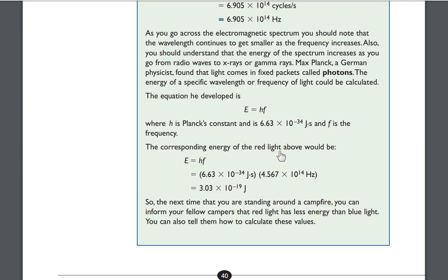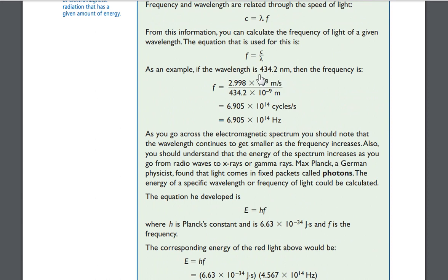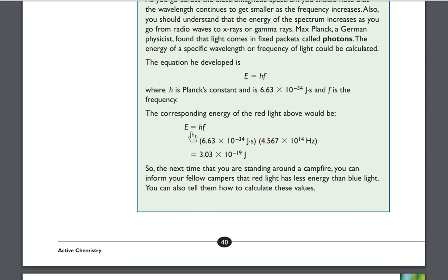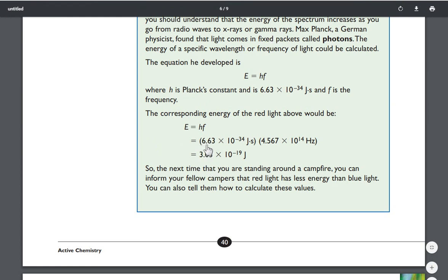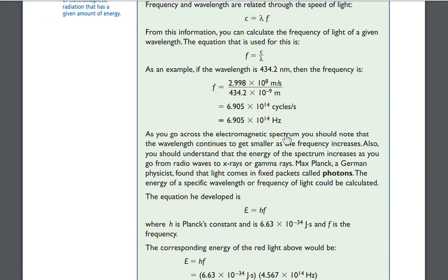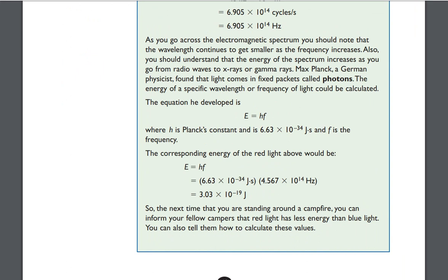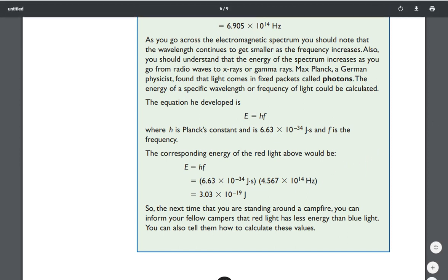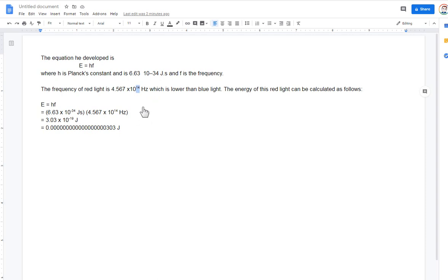So, the corresponding energy of the red light above would be E equals HF. And they're talking about this red light, by the way, with wavelength 434.2 nanometers. So, if you want to find the energy of that wave, just multiply 6.63 times 10 to the negative 34th times 4.567. Oh man, where are they getting 4.567 from? Okay. This is all messed up. Let's use this instead.